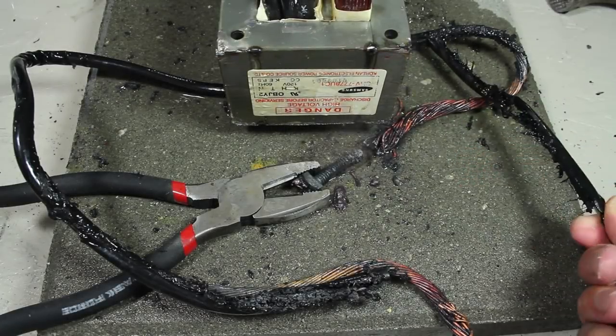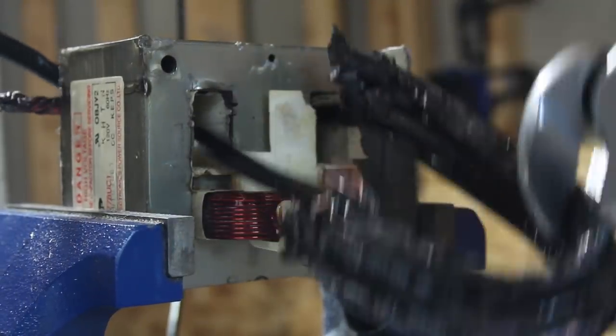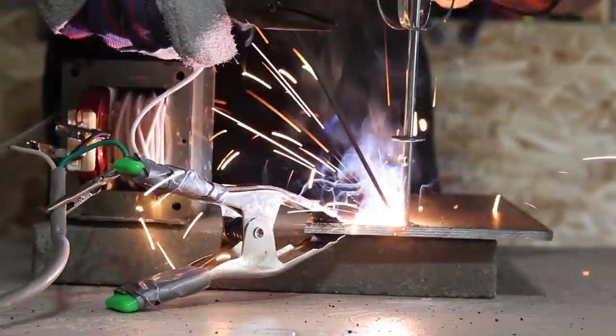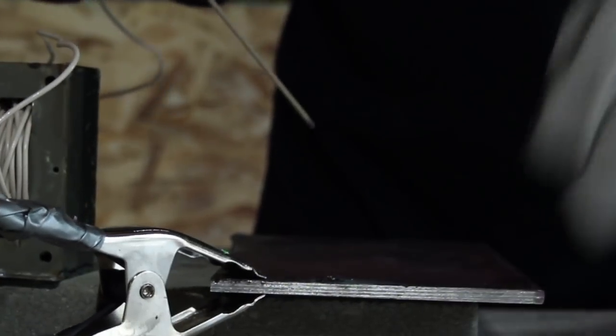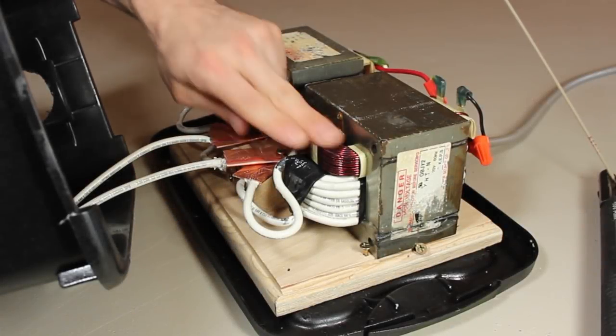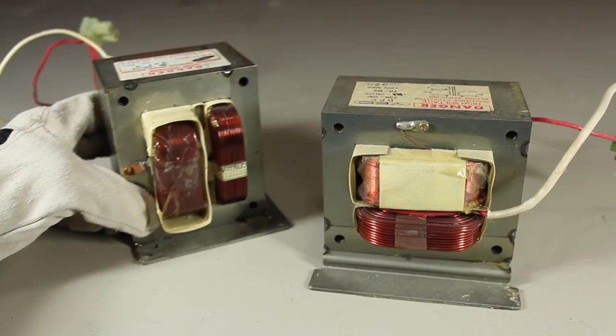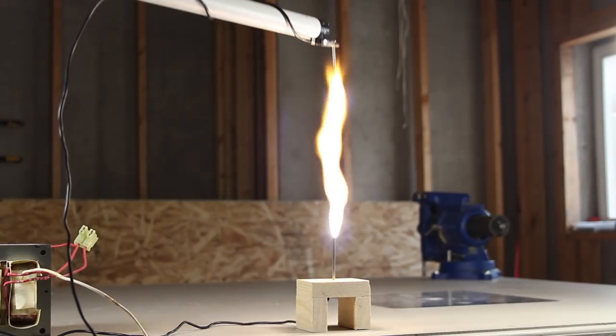When I burned up the wires on my first metal melter, I decided to turn the transformer core into a stick welder. But one transformer wasn't enough to actually make it weld anything. In this project we'll be modifying two microwave transformers, because more transformers means more power.